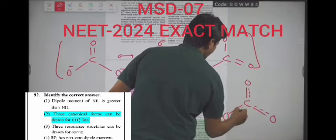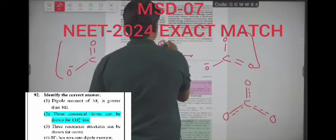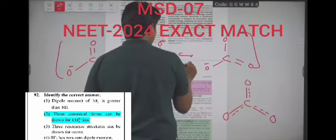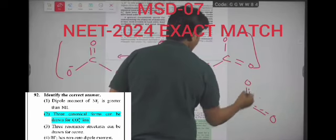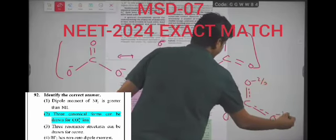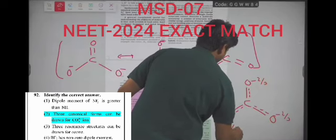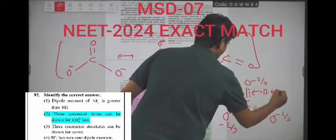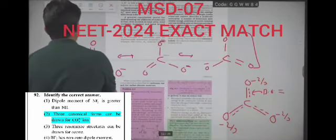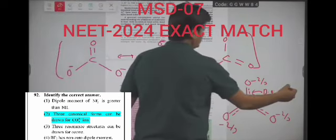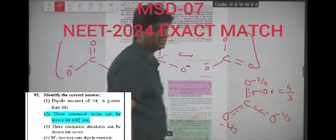...double bond, partial double bond, partial double bond. Total charge minus one - sorry, minus two - distributed on three oxygen atoms. So minus two by three, minus two by three, minus two by three. What is the bond order there? Bond order: total bonds - one, two, three, four - four bonds on three places, four by three.